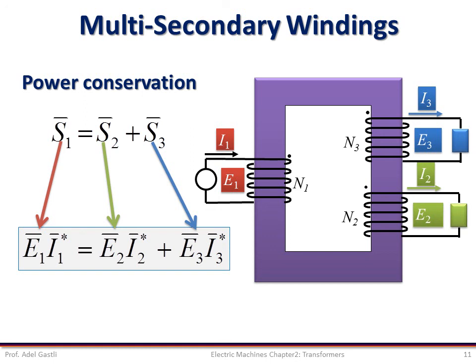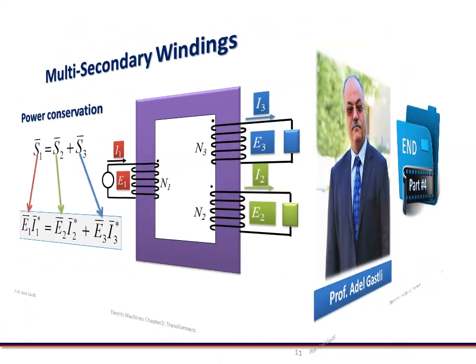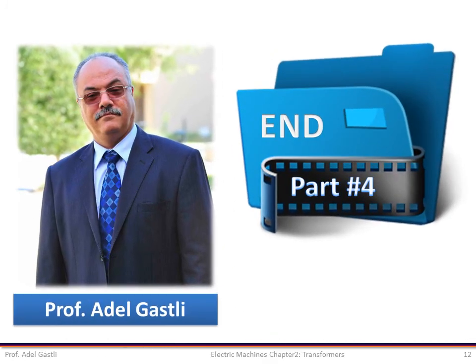Multi-winding transformers are usually used to transform the source voltage into several different voltages at the secondary side. However, these voltages are available only in steps, and we cannot have a wide range of variation. This is the end of this part — thank you for watching.